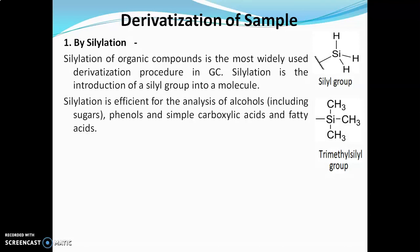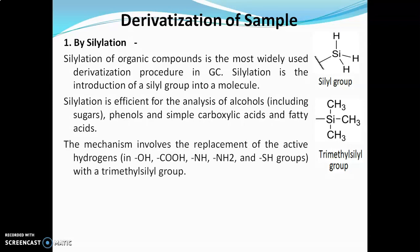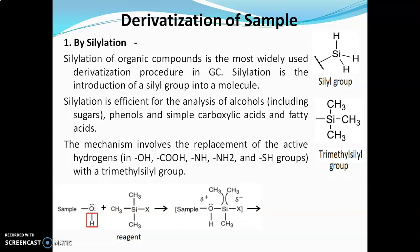Silylation is efficient for analysis of alcohols including sugars, phenols, simple carboxylic acids and fatty acids. The mechanism involves replacement of active hydrogens — such as hydrogen of the hydroxyl group, hydrogen of the carboxylic acid group, hydrogen of the amine group, and hydrogen of the sulfahydryl group — with a trimethylsilyl group. This is the general reaction of silylation, where the active hydrogen of the sample reacts with the silylating reagent via a transition intermediate, and finally the hydrogen is replaced by the trimethylsilyl group.